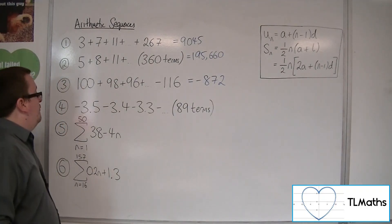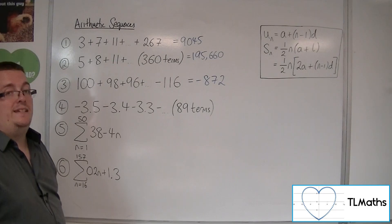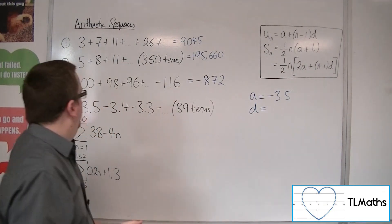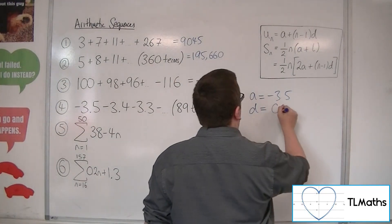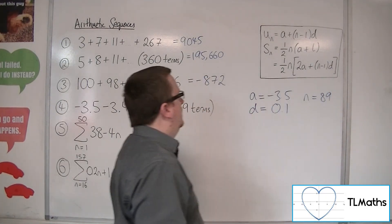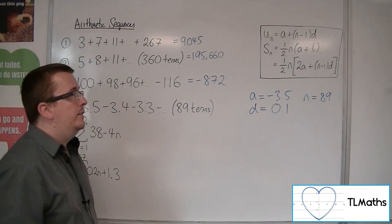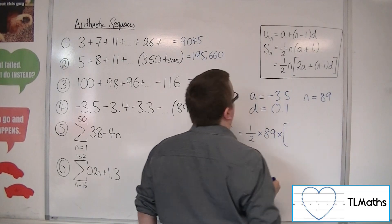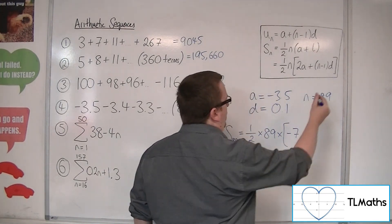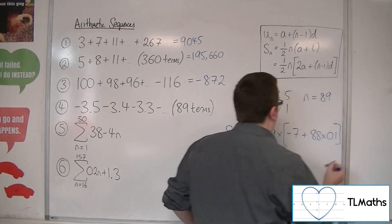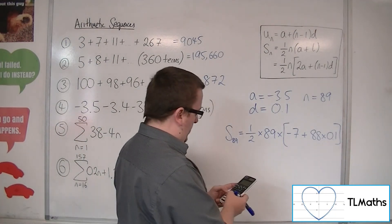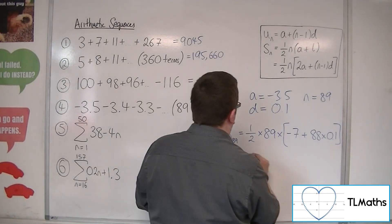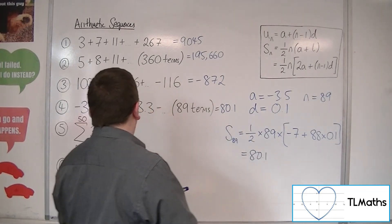Number 4: minus 3.5, minus 3.4, minus 3.3, and so on for 89 terms. The first term is minus 3.5, the common difference is 0.1, adding 0.1 each time, and n is 89. I don't need to work out the last term; I can go straight into the second formula. The sum of the first 89 terms is 1 half times 89 times (2 times minus 3.5 plus (89 minus 1) times 0.1), which is 1 half times 89 times (minus 7 plus 88 times 0.1), giving 80.1.